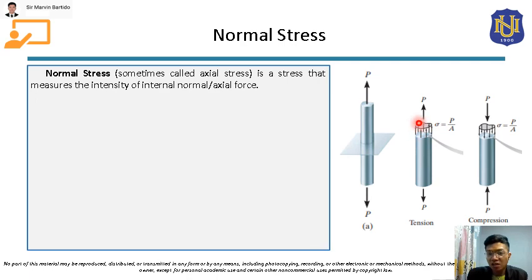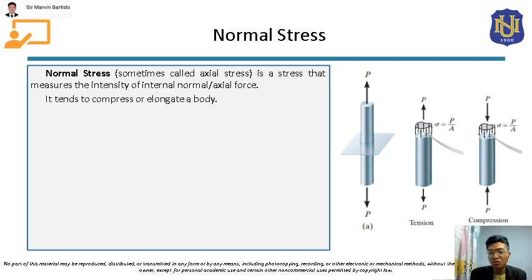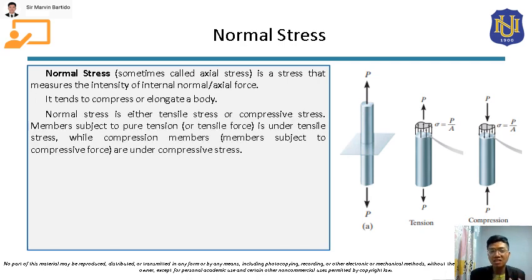This is the graphical representation of the normal stress, showing the normal stress that the body experiences in this section. The direction of the normal stress is the same as the direction of the internal normal force. Normal stress tends to compress or elongate a body. If a normal stress causes the body to be compressed, that normal stress is called a compressive stress. If the normal stress causes the body to be elongated or tensioned, then it is called a tensile stress.